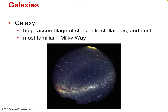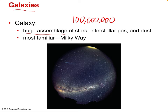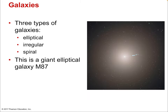Stars are grouped into galaxies — huge assemblies of around a hundred billion stars per galaxy. Our galaxy is a typical galaxy, just as our sun is a typical star. There are three main types of galaxies: elliptical, irregular, and spiral. Elliptical galaxies are large clouds of stars that tend to be red — longer-lived, cooler types of stars — without many short-lived blue stars, since the galaxy doesn't support their continual growth.